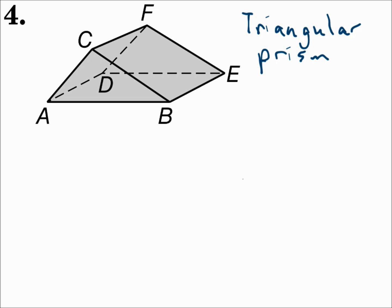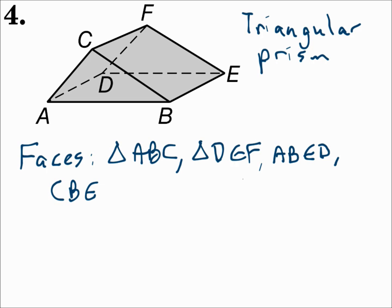The faces of the triangular prism start with the two bases. The two bases are triangle ABC and triangle DEF. Then you have the three rectangles that wrap around. Rectangle ABED on the bottom, CBEF, and ADFC.